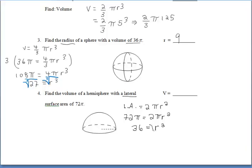When we divide both sides of the equation by 2 pi, we're left with 36, and that's equal to r squared, so our radius is 6.